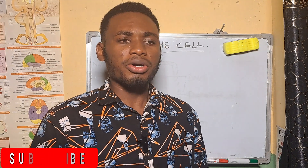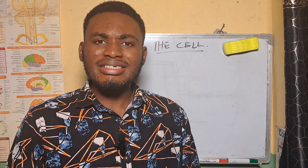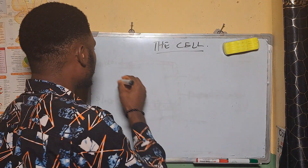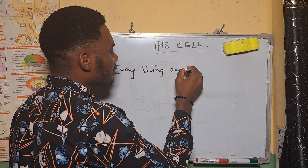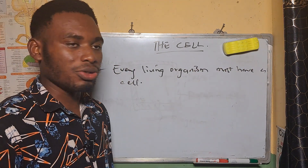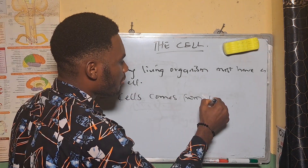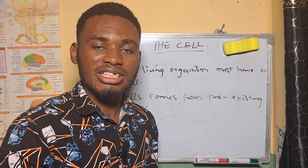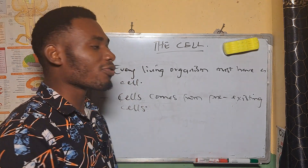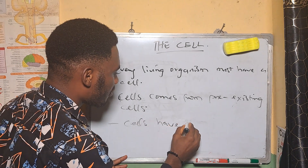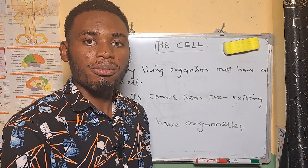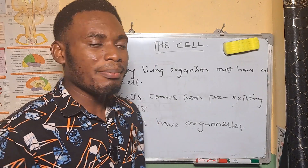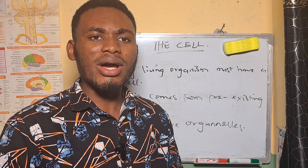There is a word we call cytology — cytology means the study of cells. Some cytologists and biologists made research about cells, and these scientists gave what they call the cell theory. The cell theory postulates that every living organism must have a cell. Secondly, cells come from pre-existing cells — that is, cells give birth to cells through reproduction and cell division. Lastly, cells have organelles that perform specific functions.